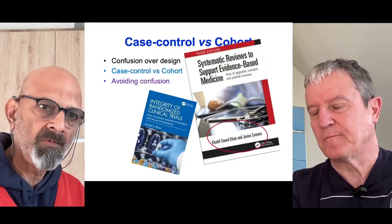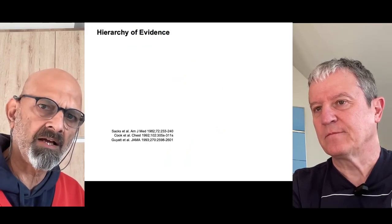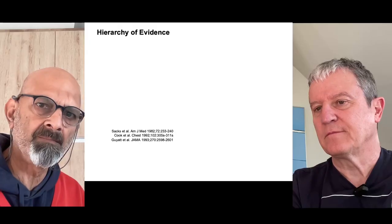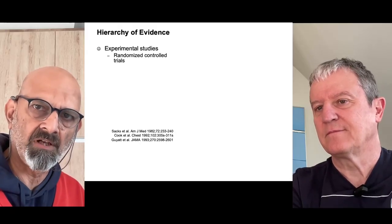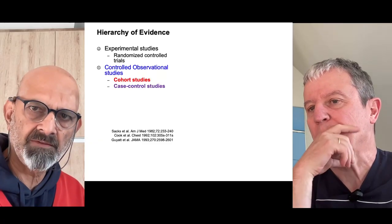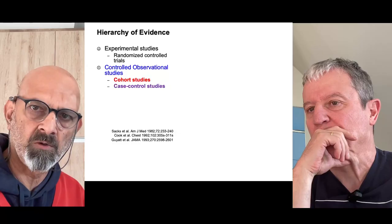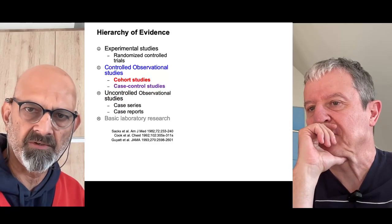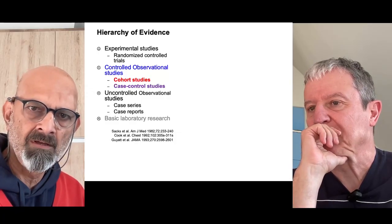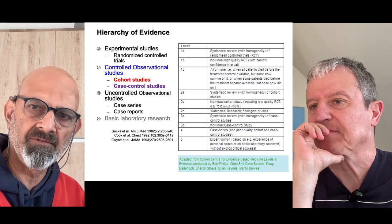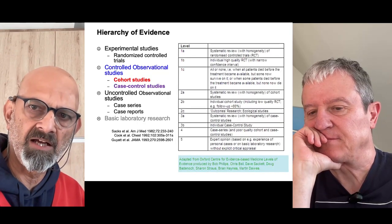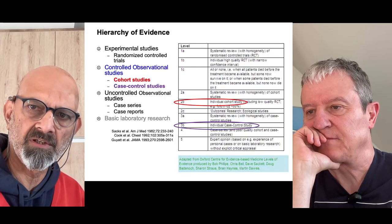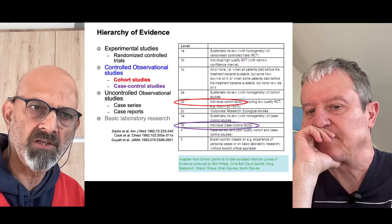Thank you very much, Javier. We now move on to look at what is the hierarchy of evidence. Evidence-based medicine likes randomized trials a lot. After randomized trials, it has controlled observational studies — cohort studies and case control studies — which fall within this category. Uncontrolled laboratory studies fall much lower down in the ranking. Looking at levels of evidence from the Center for Evidence-Based Medicine at Oxford University, cohort study has a level called 2B, and case control study is 3B.